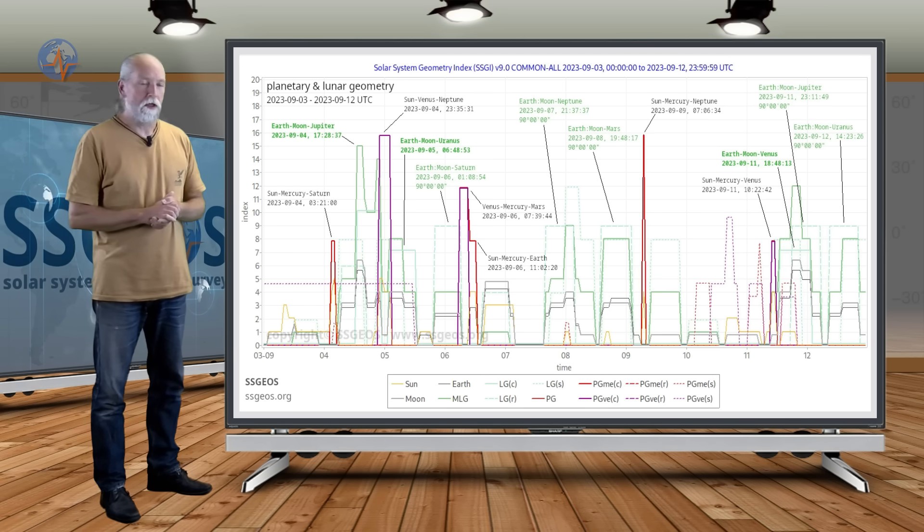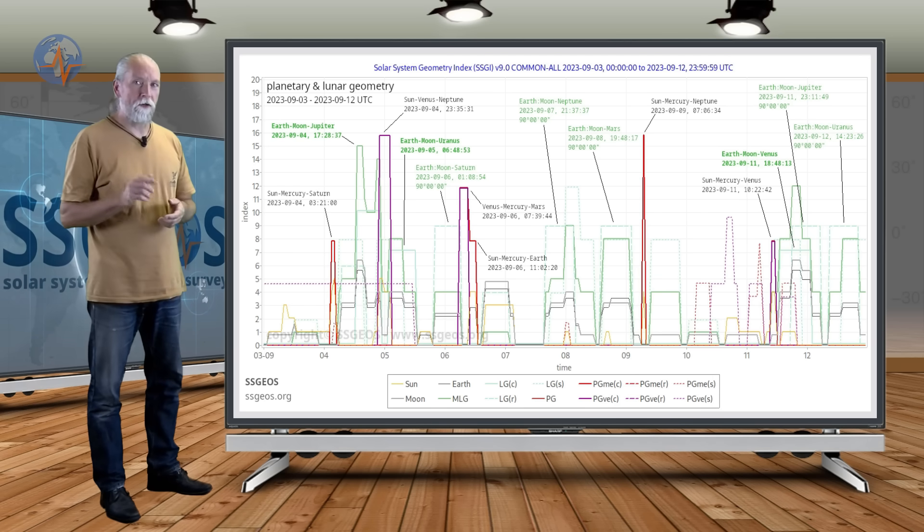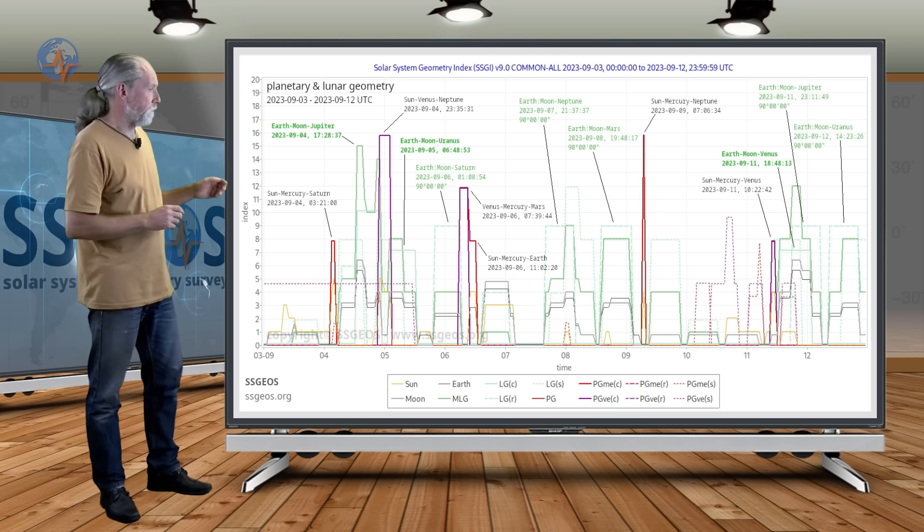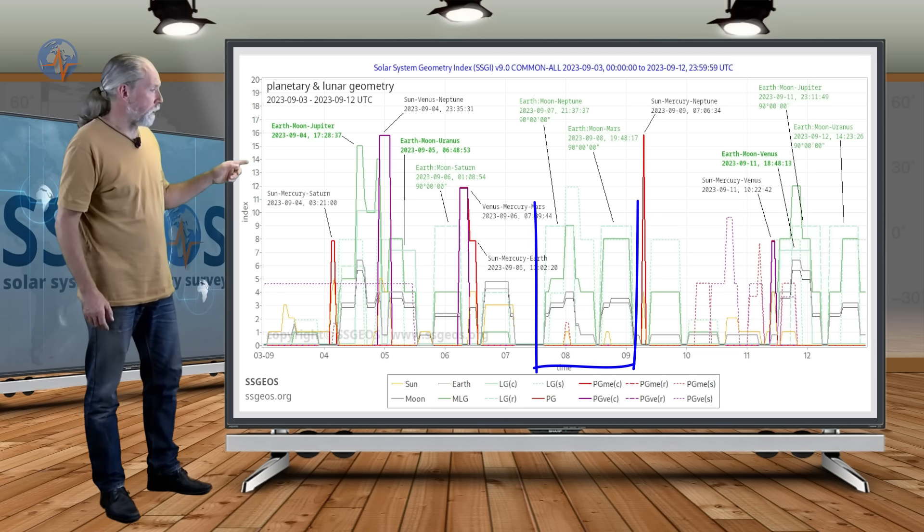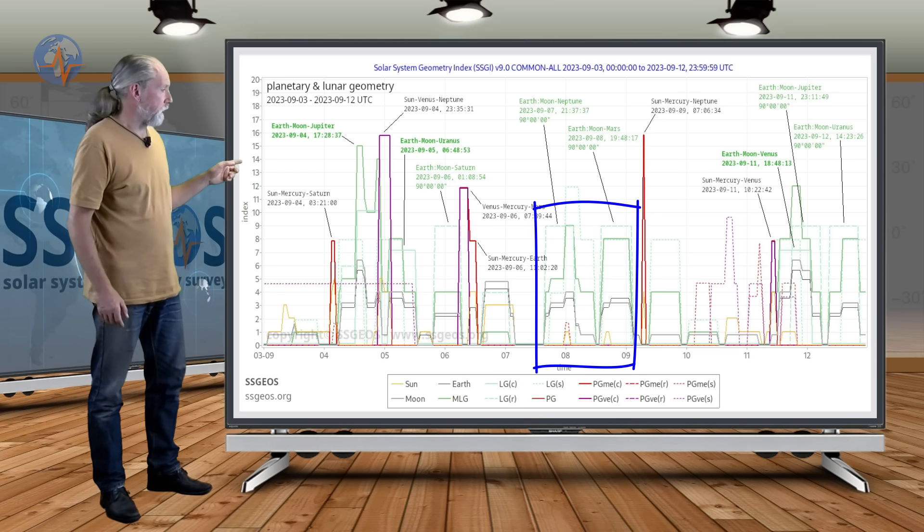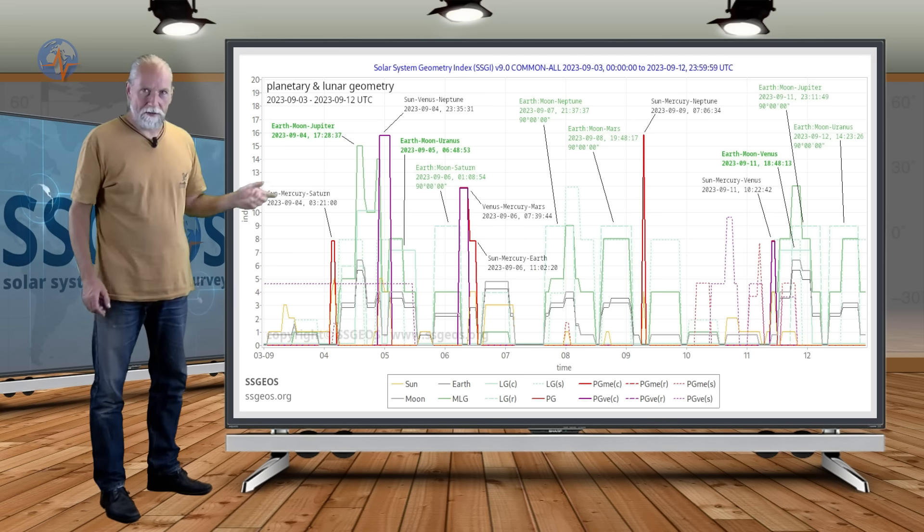But we will keep an eye on that and I will refer to that geometry later on as well. We also have Earth-Moon-Neptune and Earth-Moon-Mars right angle lunar geometry on September 7th and 8th.